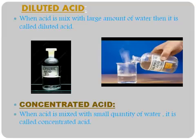Dilute acid: when acid is mixed with a large amount of water, it is called diluted acid. Concentrated acid: when acid is mixed with a small quantity of water, it is called concentrated acid. In diluted acid, water is more and acid is less. In concentrated acid, fumes are visible — water is less and the quantity of acid is greater.